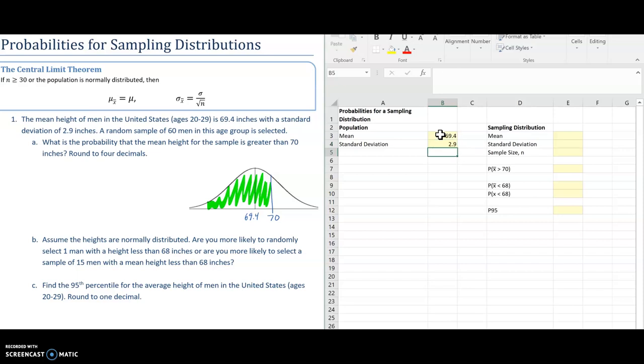A random sample of 60 men in this group is selected, so I can fill in 60 over here in Excel. And we are being asked to calculate the probability that the mean height for the sample is greater than 70 inches. So that's this guy right here. And you can see I have an x bar over that because this is a sample that I took, and I want to see the probability of that being greater than 70, the mean of that.